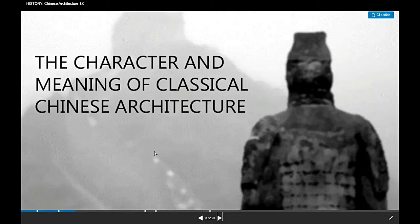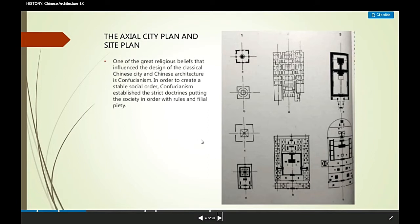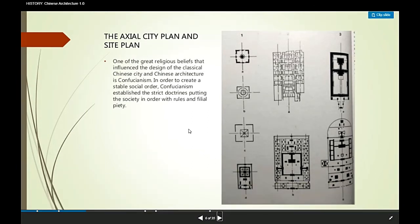The character and meaning of classical Chinese architecture — here is their typical plan for the city plan and the site plan. One of the great religious beliefs that influenced the design of the classical Chinese city and Chinese architecture is Confucianism.